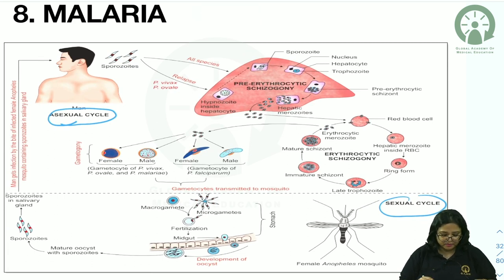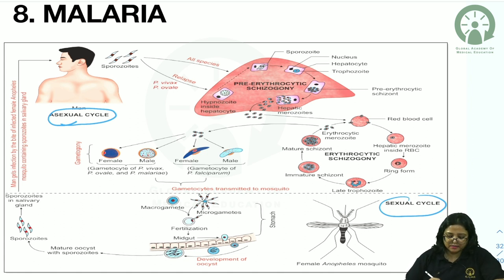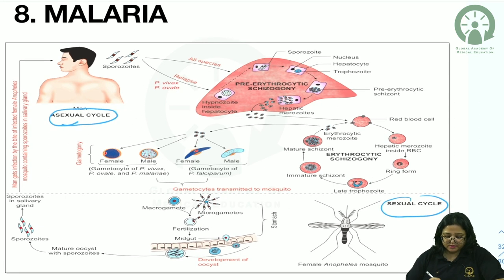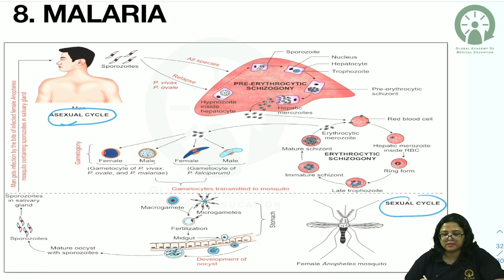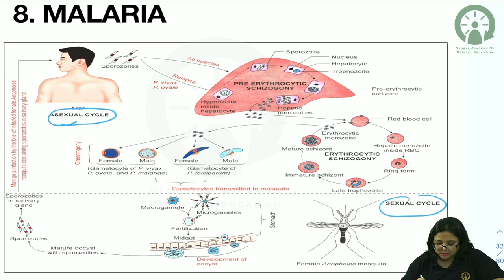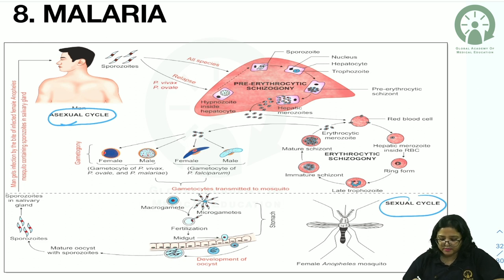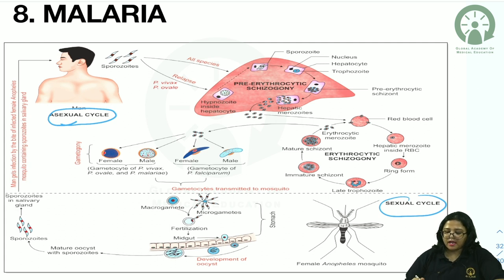In the liver, there is pre-erythrocytic schizogony: sporozoites change morphology to trophozoites inside hepatocytes, leading to pre-erythrocytic schizogony and ultimately merozoites. Some merozoites are converted into hypnozoites, which are responsible for the relapse of malaria, seen in Plasmodium vivax. Once merozoites enter the blood circulation, they enter RBCs for erythrocytic schizogony.